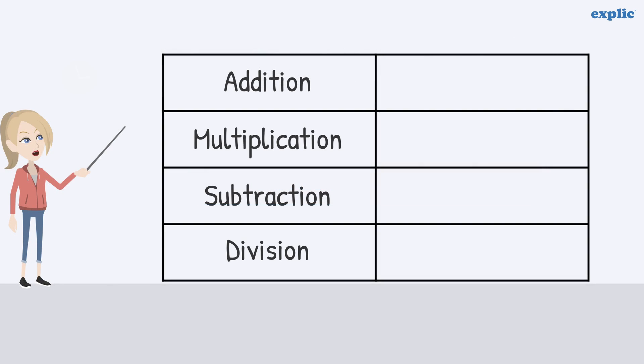To summarize, the whole numbers are closed under addition and multiplication, but not under subtraction and division.